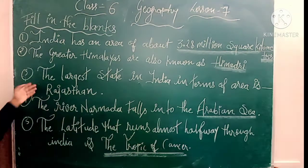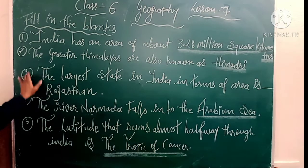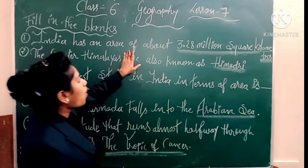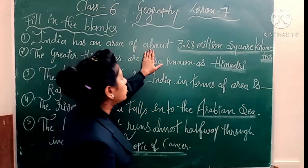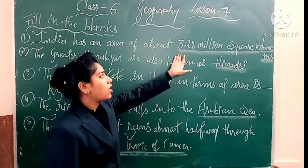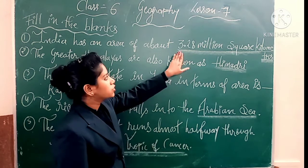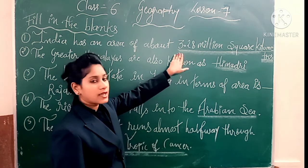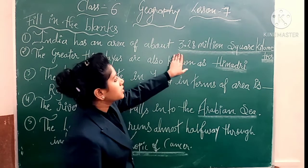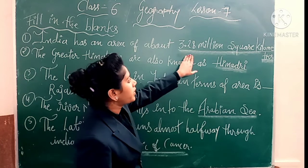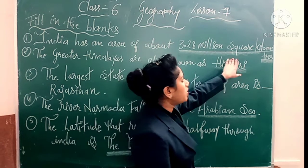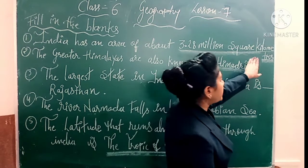Your first fill in the blanks is: India has an area of about — dash diya hua hai, aap ki book pe dash diya hua hai. Toh jub khali jagah hai, dash diya hai, wahan se answer put kare. 3.28 million square kilometer.